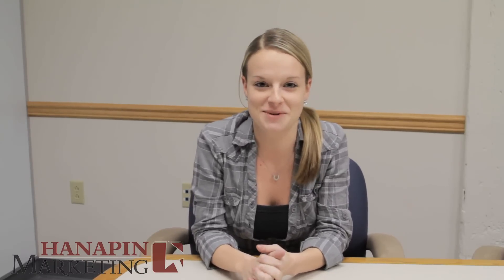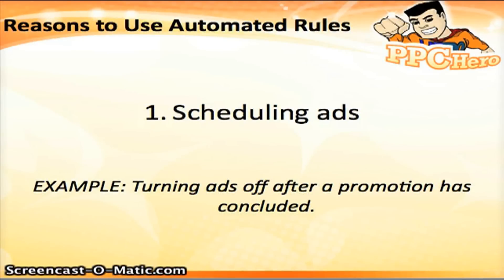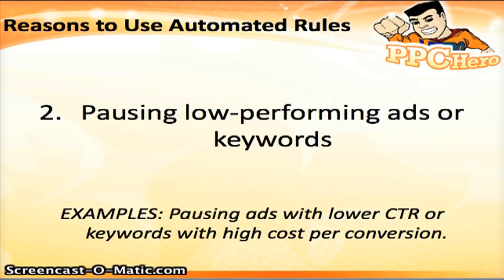First, let's review some of the reasons you may want to implement automated rules in your PPC account. The first reason is to schedule ads — for example, turning your ads off after a promotion has concluded. The second way is by pausing your low-performing ads or keywords, such as pausing ads with lower click-through rates or keywords with higher cost per conversion.